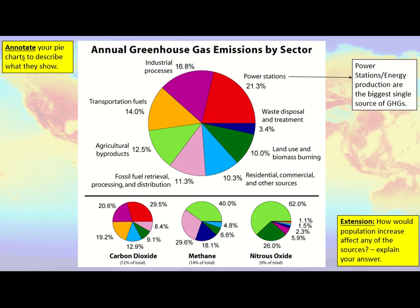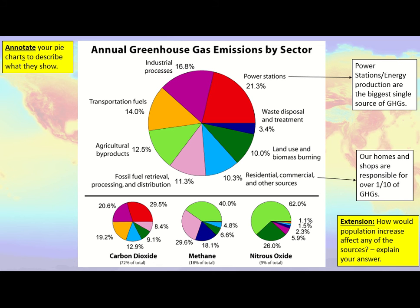Hopefully you've had a good long look at the pie charts and identified some patterns and trends. I'll add a few more points — please add to your annotations if you haven't got these. 10% of greenhouse gas emissions comes from homes and shops: 'residential' means homes, 'commercial' means shops. So over 10% of greenhouse gas emissions come from what we do at home — turning up heating, using washing machines, dishwashers, and charging mobile phones.